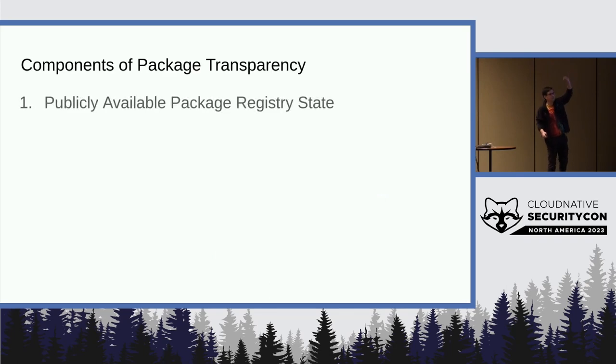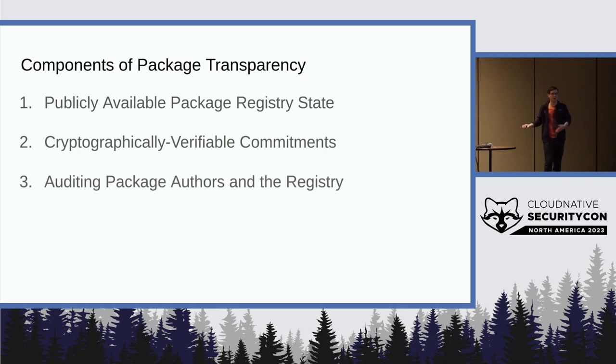The first of which is publicly available registry state. Everybody needs to be able to download and access the fundamental data of the registry. And we need the registry to make cryptographically verifiable commitments to that state and that data, that then allows us to audit it, both in various different ways.